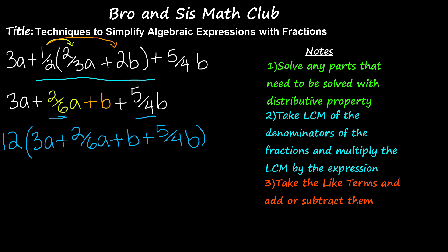When you multiply 12 times 3A, you will get 36A. And when you multiply 12 by 2 over 6A, you will get 12 times 2 is 24, 24 divided by 6 is 4A. When you multiply 12 by B, you will get 12B.